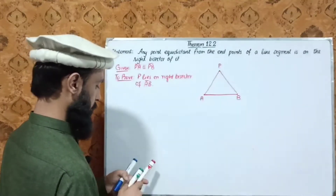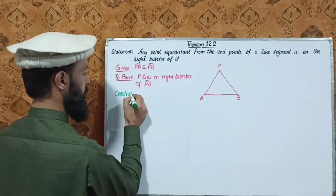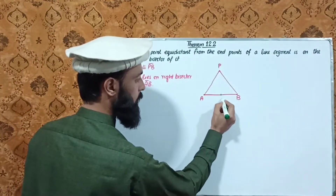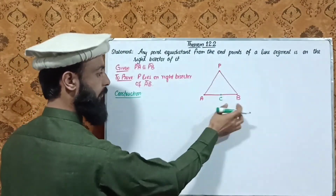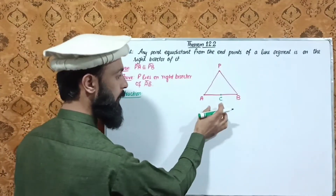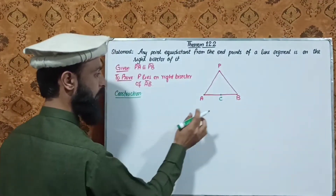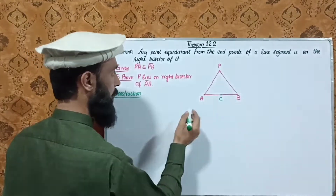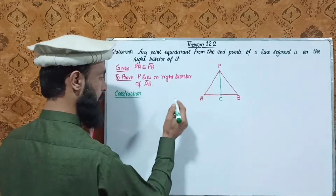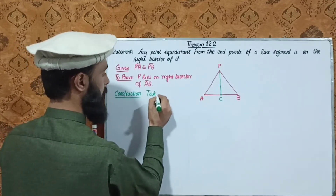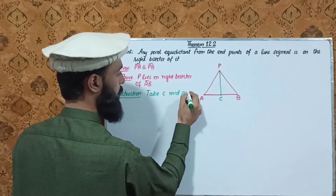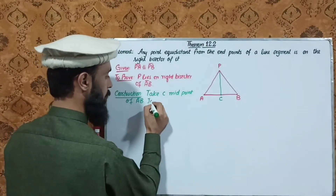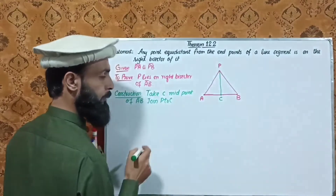Construction: Let C be the midpoint of AB. C is the midpoint of AB, so it divides AB into two equal segments — AC equals BC. Join P to C.